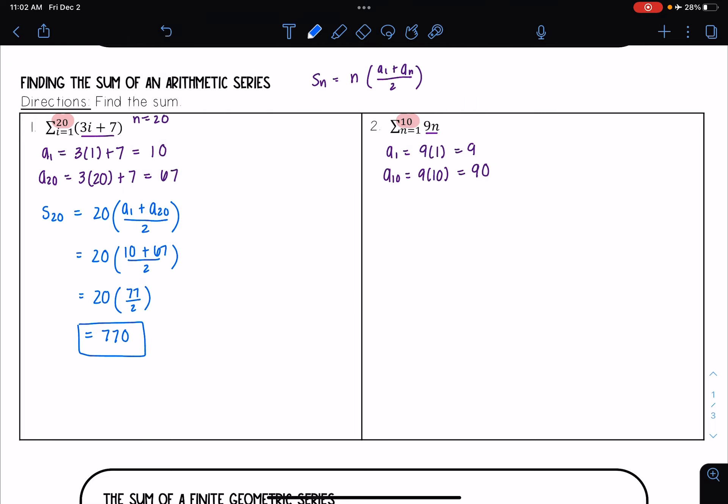And so now that I have those I can find my sum. So I have the sum S10 is equal to, I'm going to replace all my n's now with 10. So instead of n I have 10 times a1 plus a10 over 2.